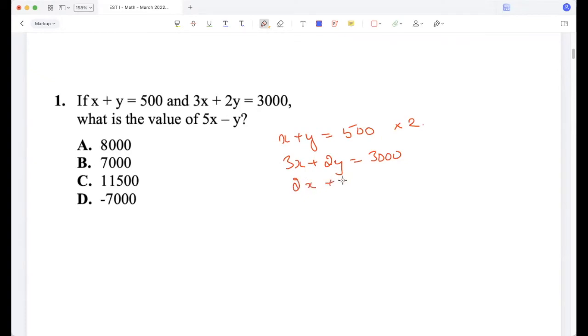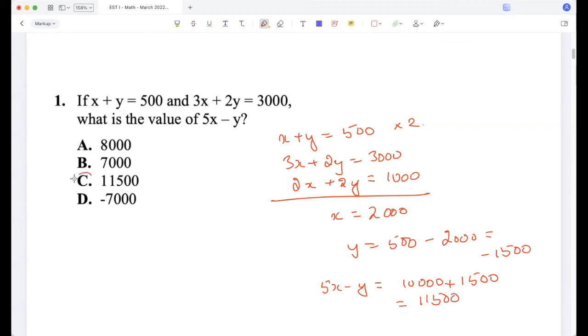So 2x plus 2y is 1000, and now if I subtract them I'll get x is 2000. And if I put x is 2000 here, then y is 500 minus 2000, which is minus 1500. So 5x minus y will be 10,000 plus 1500, which is 11,500. Option C.